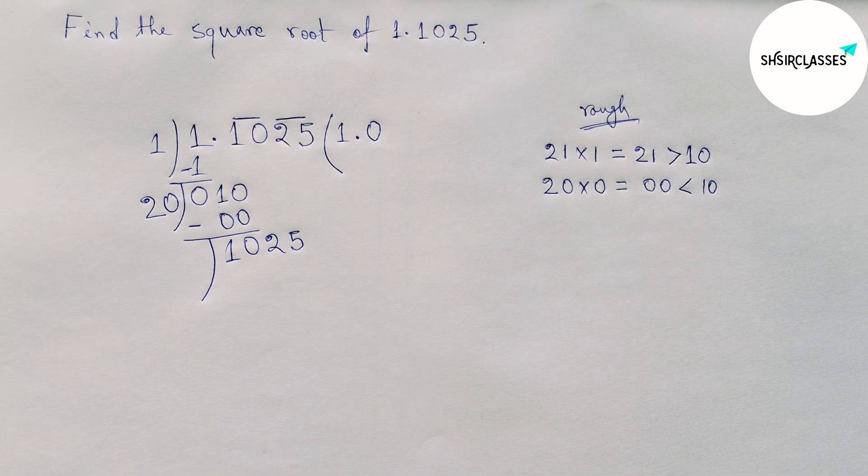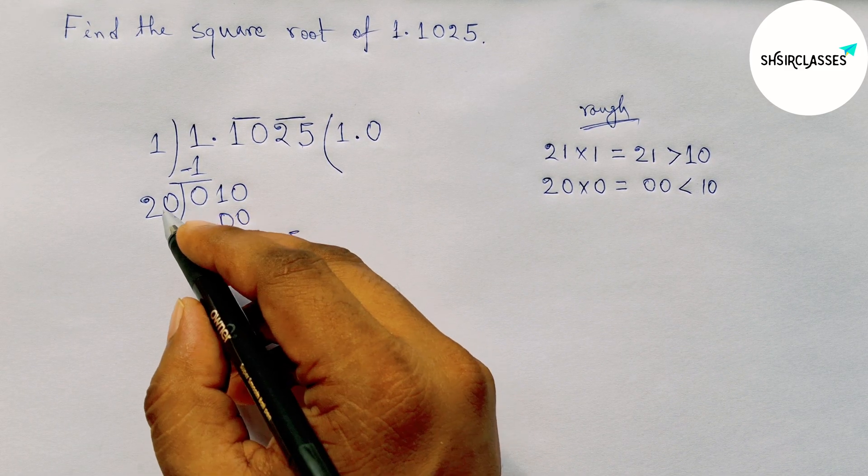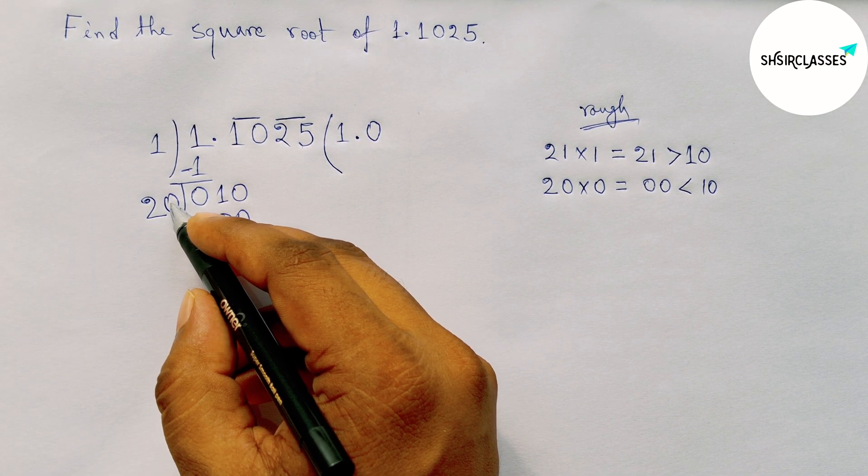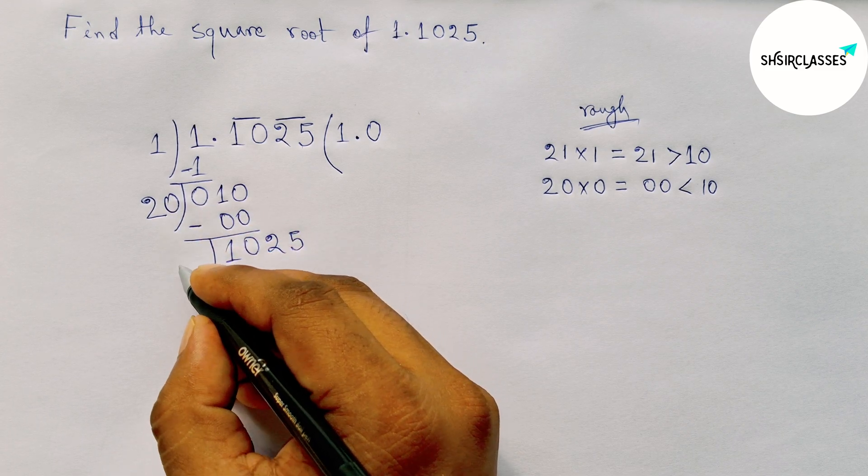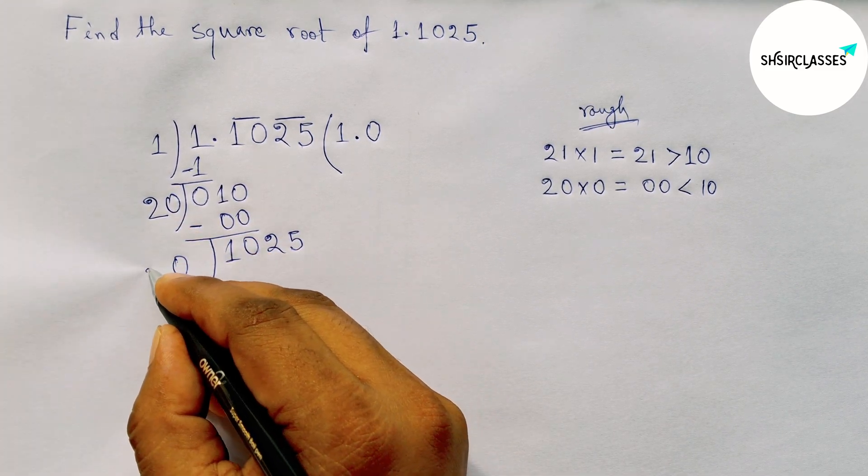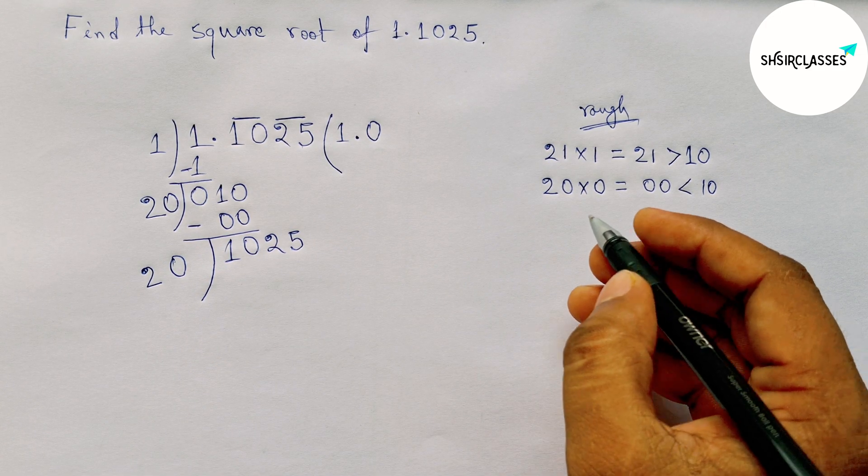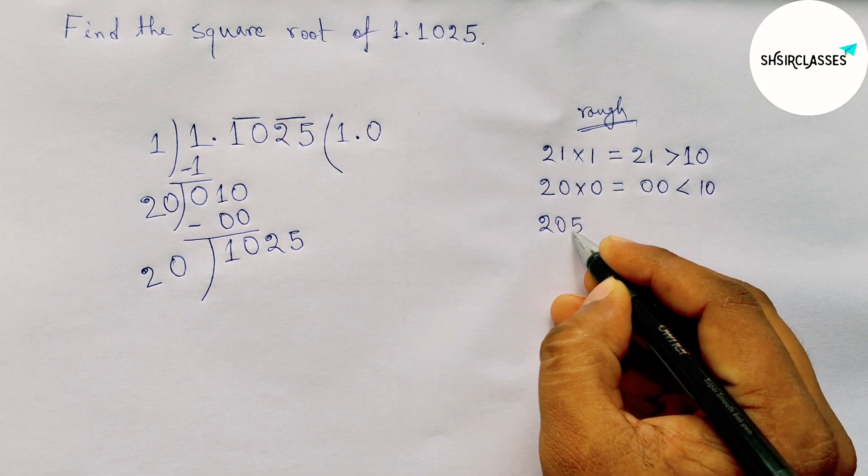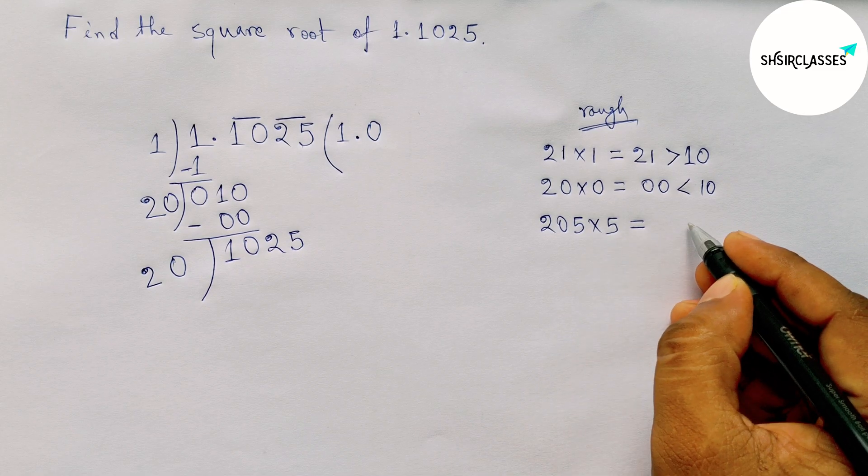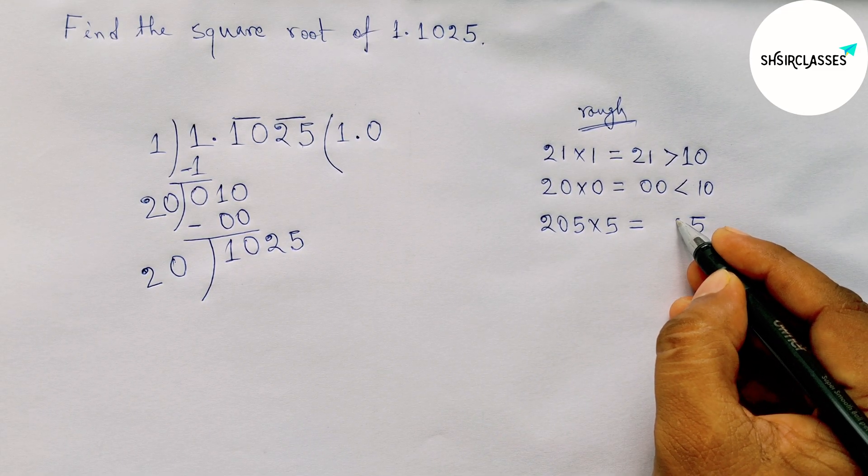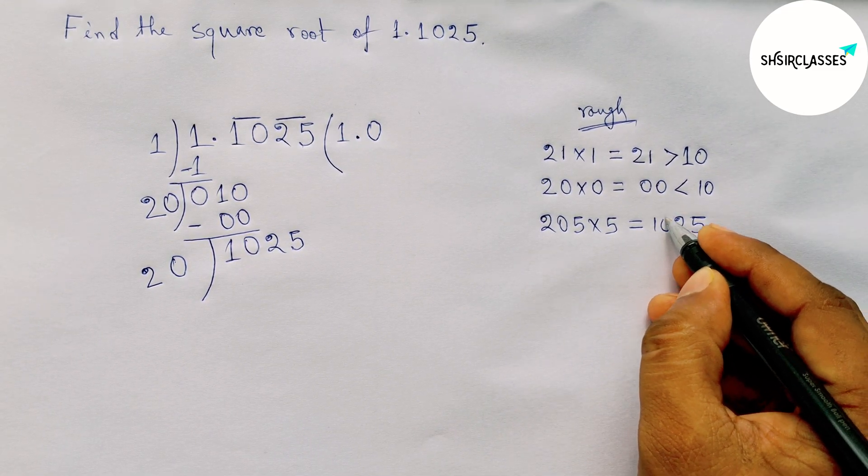Now here the unit place is zero, so double of zero will be zero and two will be the same. Next, by same way, putting a number here and multiplying by that number. So directly putting here five and multiplying by five.